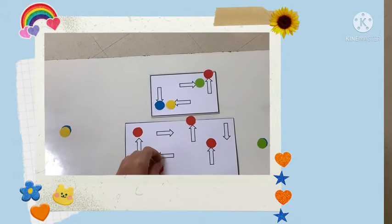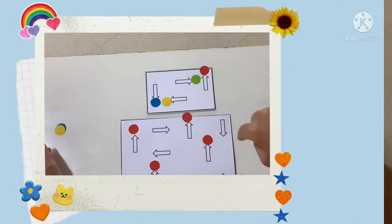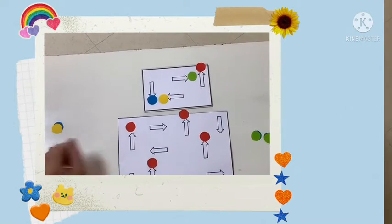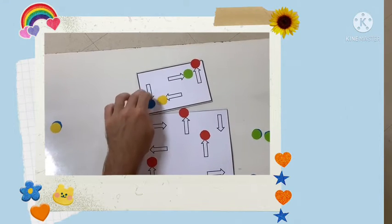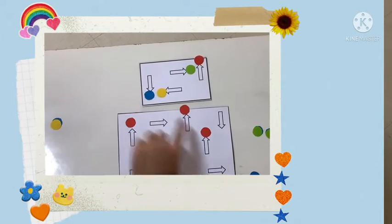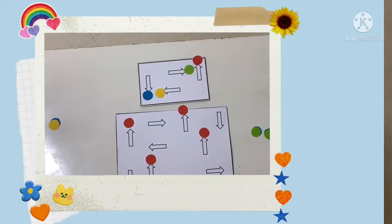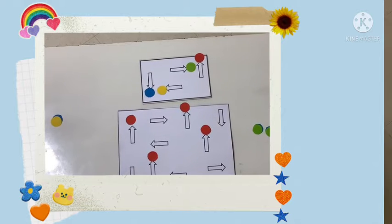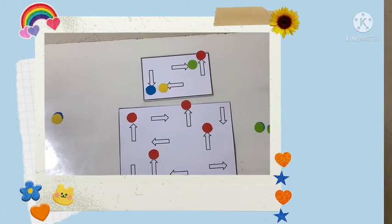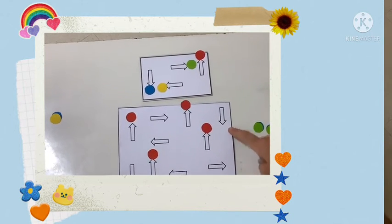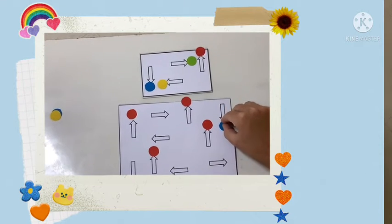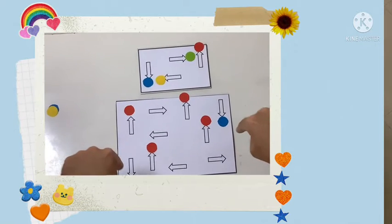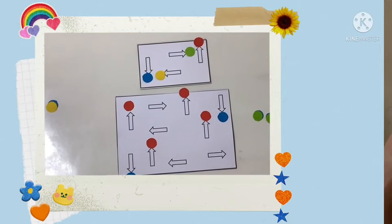Let's do all our down arrows. I'm going to need blue, a blue circle. Can you find another down arrow? Very good, blue circle. Are there any more arrows going down? I don't think so.